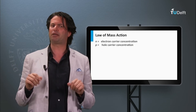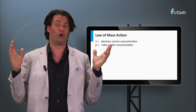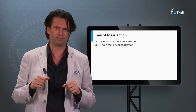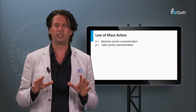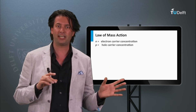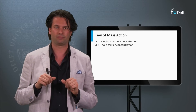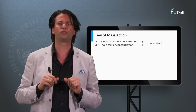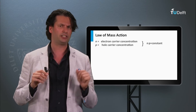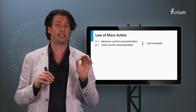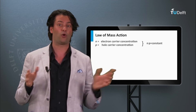The density of charge carriers can be described by the law of mass action. This law tells us that at a given temperature, the product of the electron density and the hole density is constant, independent of the doping concentration. If n corresponds to the electron density and p corresponds to the hole density, this law tells us that the product n times p is constant, even if we would manipulate either n or p.